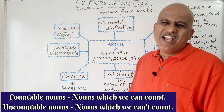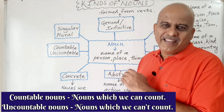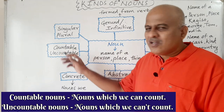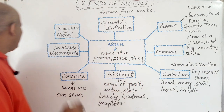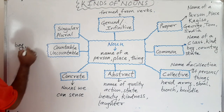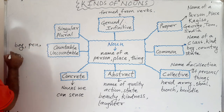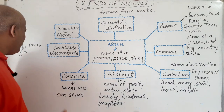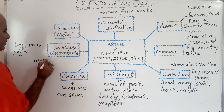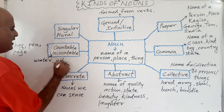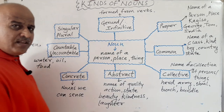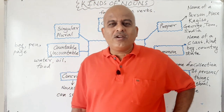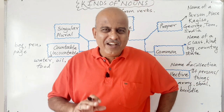Countable or uncountable — quite easy. If we can count them — one, two, three, four, five — then those nouns are countable nouns. Boy, pen, page — we can count them. But if we cannot count them, for example water, oil, food — can we count them? No. You can say five glasses of water, but you cannot say five water. One noun can come in many categories — for example, water is an uncountable noun and also a material noun.